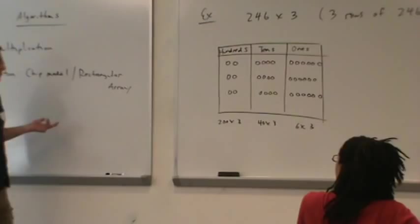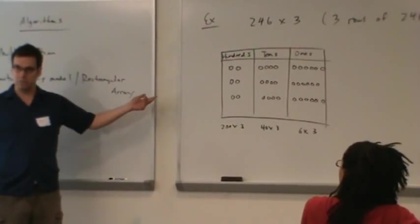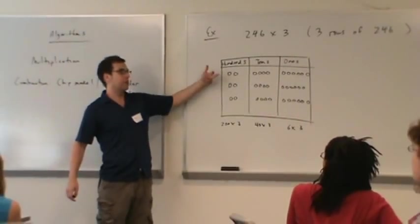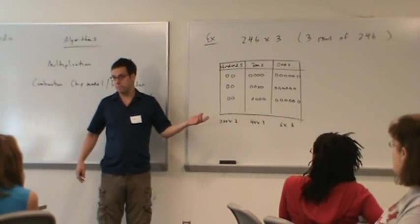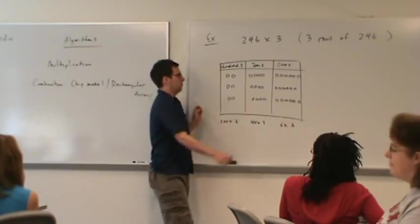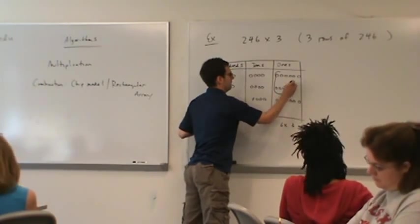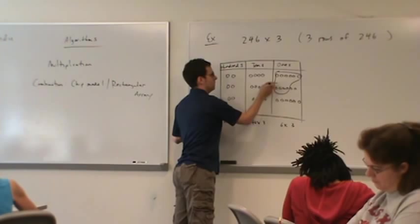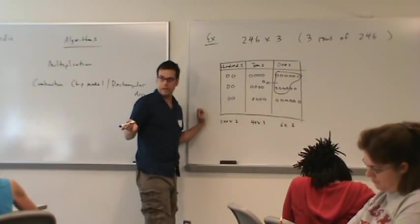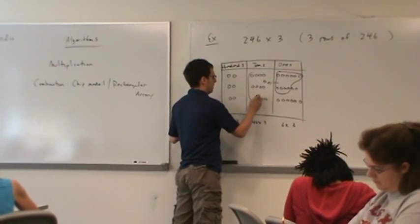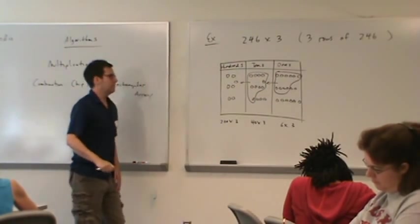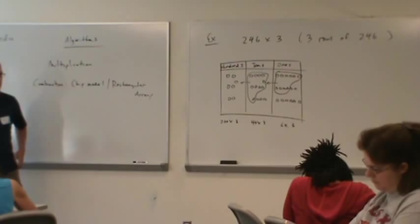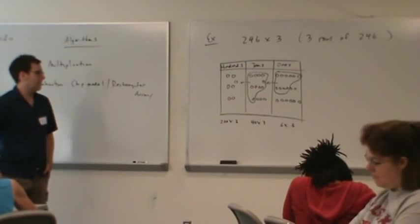We don't even have to talk algorithm in order to solve this problem. Once we realize that 246 times 3 is simply 3 rows of 246, then we just compose tens like we did yesterday. We have ten ones. Ten ones becomes one ten. There's another ten ones. Ten ones becomes one ten. And you just count chips to get your answer. Looks like it should be 738.